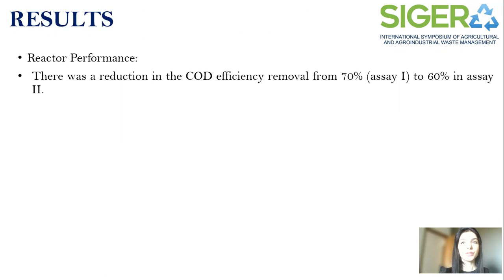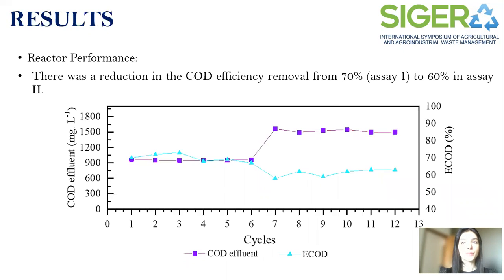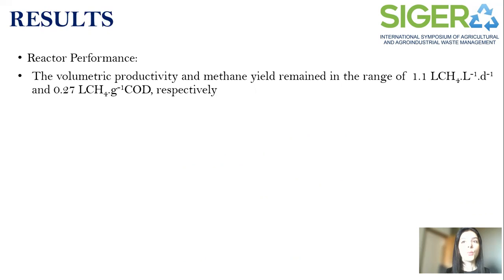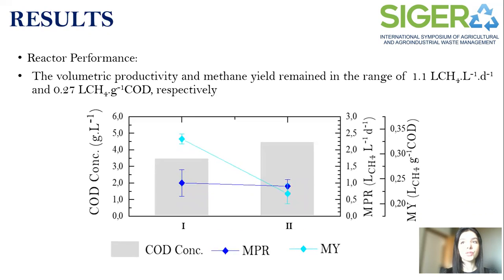As a result, there was a reduction in the COD removal efficiency from 70% in assay 1 to 60% in assay 2, as can be seen in the picture. Meanwhile, the volumetric productivity of methane and the methane yield remained in the range of 1.21 liters of methane per liter per day and 0.27 liters of methane per gram of COD respectively.